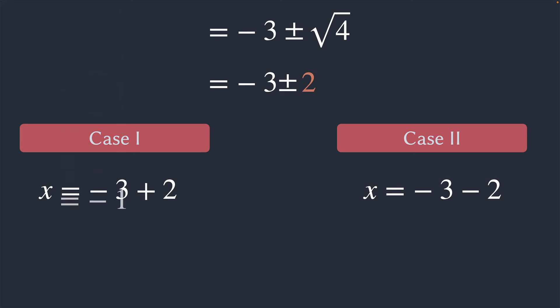Evaluating our case 1, we get x is equal to negative 1. Evaluating case 2, we see that x is equal to negative 5, and therefore, we can write the solution set to this conditional equation as negative 1, negative 5. So, those are the two values that will make our equation true.